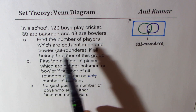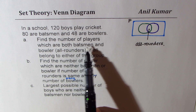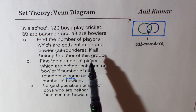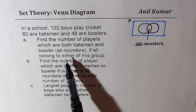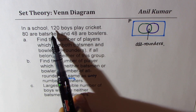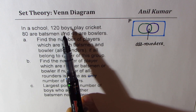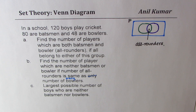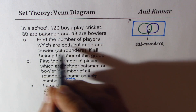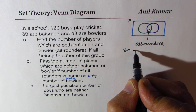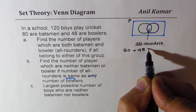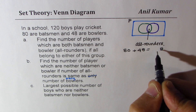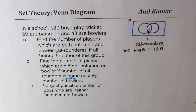Find the number of players which are both batsmen and ballers — that means all-rounders. We want to find the number common to both. If all belong to either of this group, that means all 120 boys are either batsmen or ballers or both. So if I add 80 batsmen with 48 ballers, I get 128 — that is 8 more than 120.